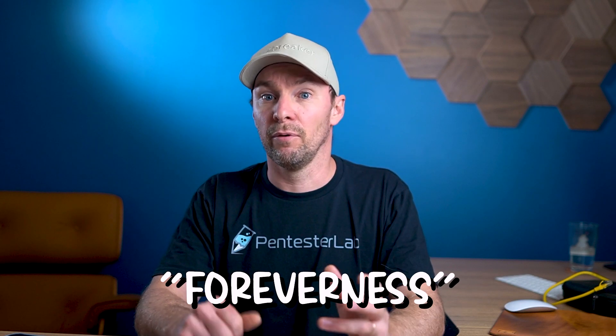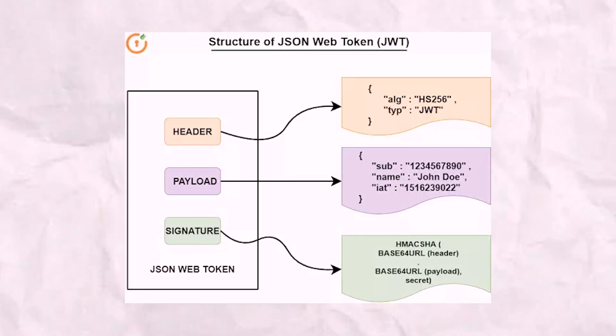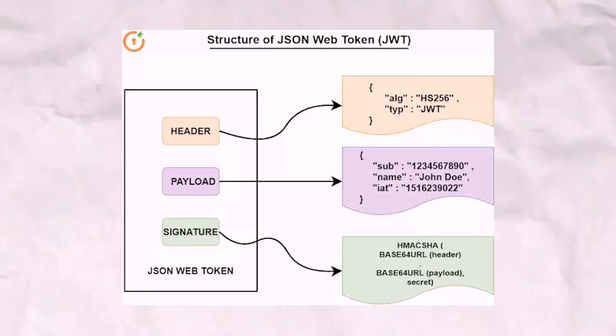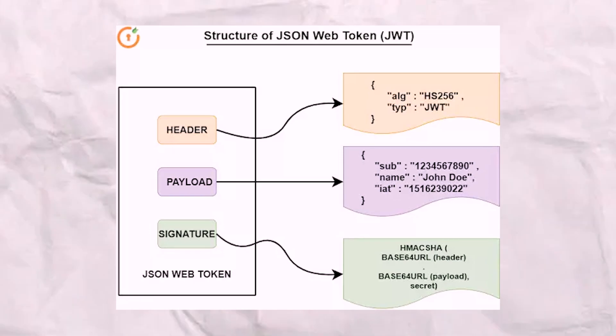An additional concern is the foreverness of JWTs. Unless specifically set, most JWT implementations don't enforce an expiration. This means that a token, once issued, can be valid indefinitely if not carefully managed.